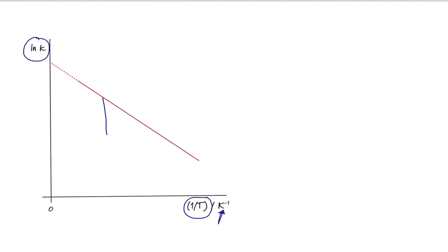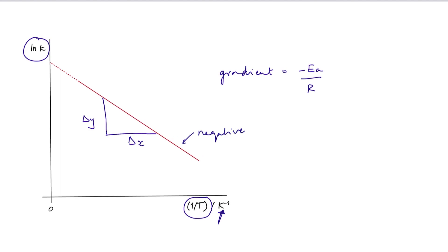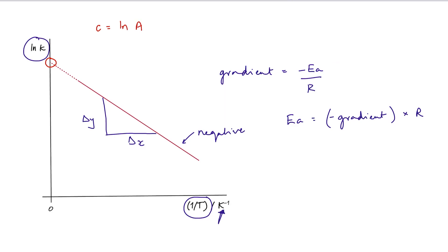If we find the gradient of this straight line — change in y over change in x — the gradient equals minus Ea over R. Note that the gradient is always going to be negative since our line is falling. That means Ea is going to equal minus the gradient times R. If we extrapolate our line back until it hits the y-axis, we have our intercept.